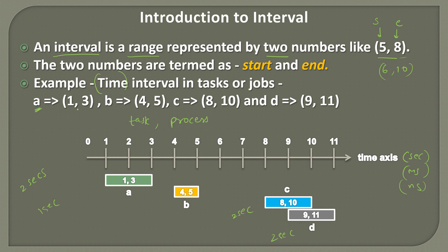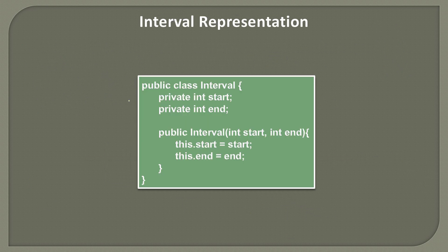An interval has two numbers: start and end. Let's see how we can represent an interval in code. The interval representation uses a custom class called Interval, which has two properties: start and end. The start represents the starting point and end represents the ending point. A constructor takes in a start and end and initializes a particular interval with these numbers.